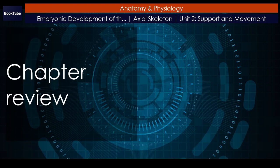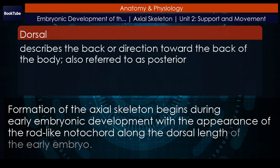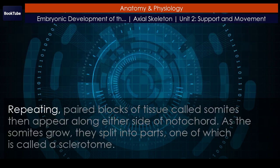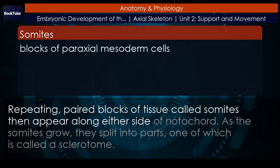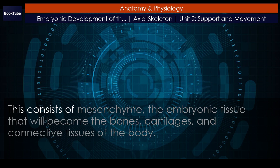Chapter review. Formation of the axial skeleton begins during early embryonic development with the appearance of the rod-like notochord along the dorsal length of the early embryo. Repeating paired blocks of tissue called somites then appear along either side of the notochord. As the somites grow, they split into parts, one of which is called a sclerotome. This consists of mesenchyme, the embryonic tissue that will become the bones, cartilages, and connective tissues of the body.